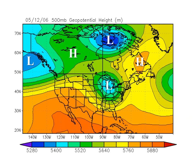The result of such a pattern is that the flow across Canada and the U.S. northern border states is not very zonal or west to east. Indeed, it's highly meridional or north to south.